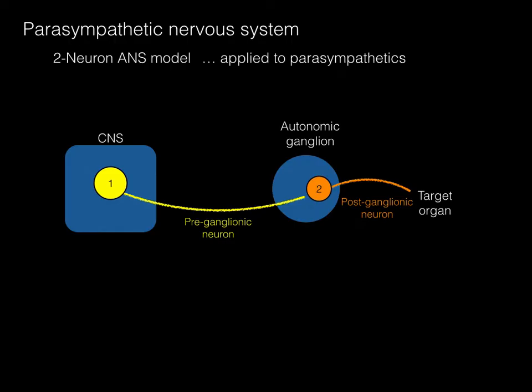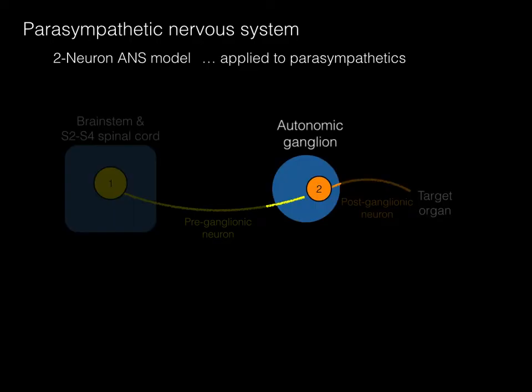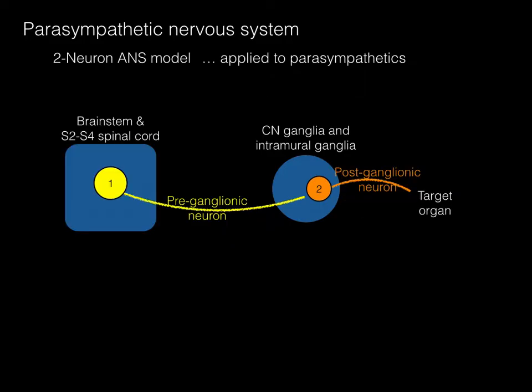We'll take this model and apply it to the parasympathetics. The CNS origin for parasympathetics is the brainstem and S2, 3, 4 spinal cord levels. The autonomic ganglion component is the cranial nerve ganglia and the intramural ganglia. And there we've got this whole model laid out.